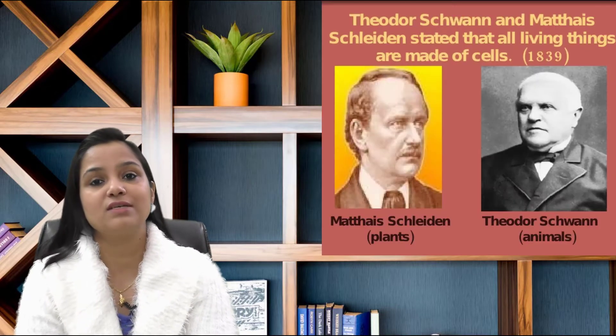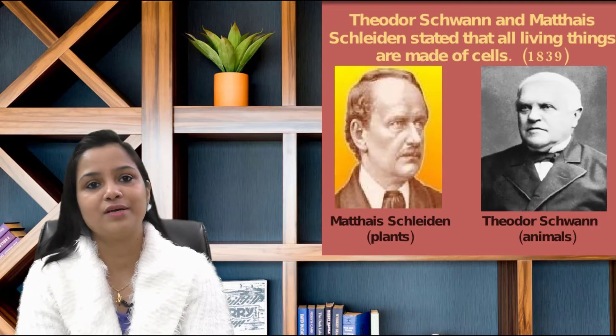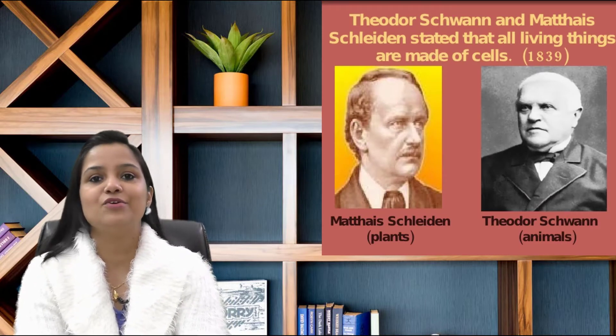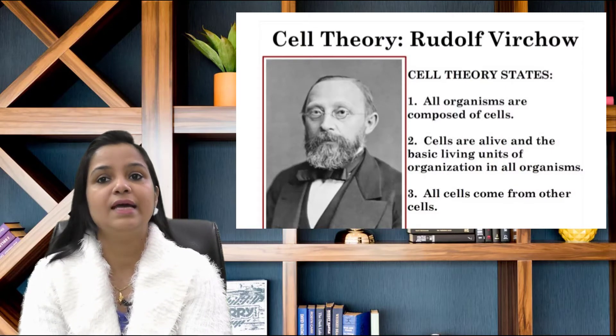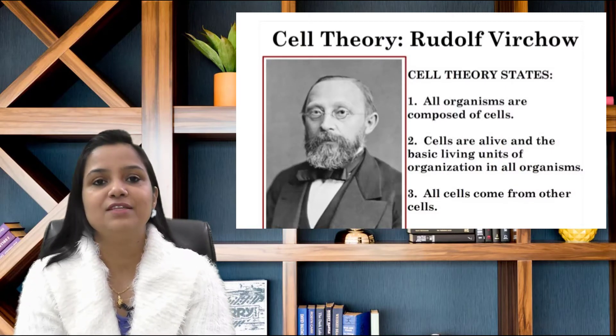3. Cell theory was given by Schleiden and Schwann. 4. Cell theory was modified by Rudolf Virchow in 1855.